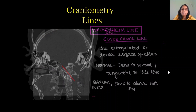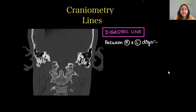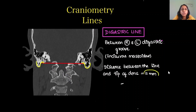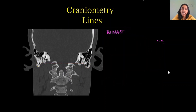Next we have the digastric line, drawn on the coronal section. It joins the right and left digastric grooves in the mastoid part of the temporal bone, also called the incisura mastoidea. The distance between this line and the tip of the dens is normally 11 mm. If it is less than 11 mm — meaning the dens comes closer to this line — it indicates basilar invagination.